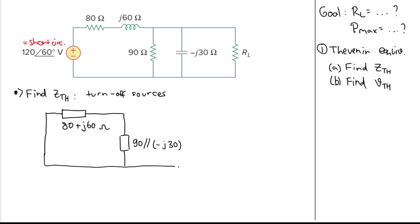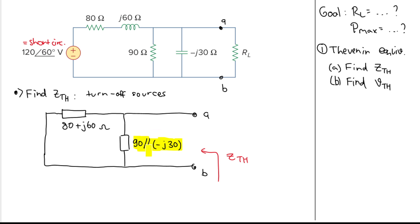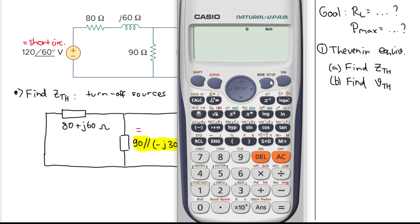We view Zth from terminal ab, which is where RL is connected. We need to simplify this first because it is in circuit notation, not yet a single mathematical value. So we need to find the value of this parallel combination first, and I will use a calculator for that.